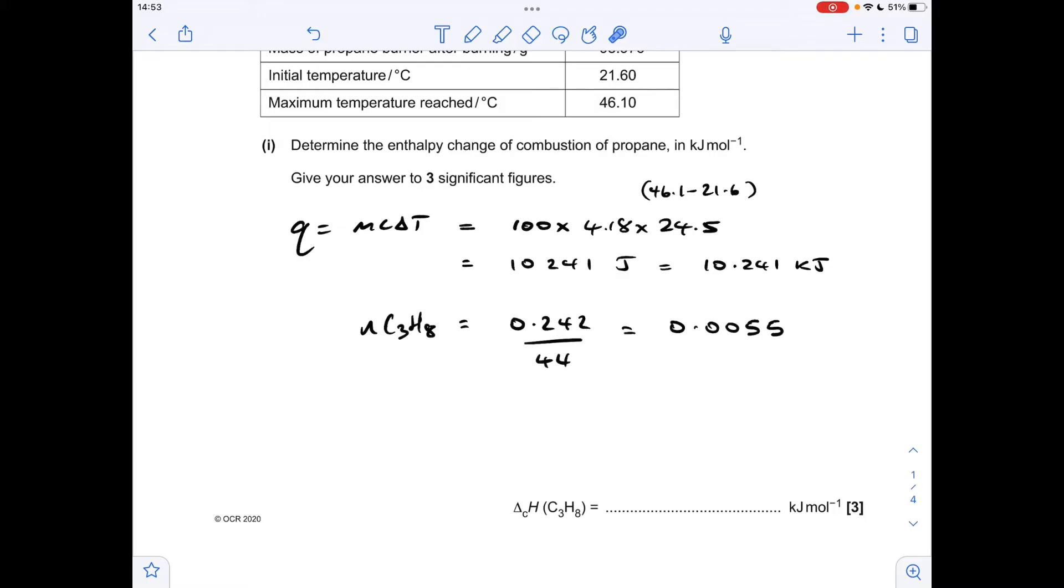The next thing we do is work out the moles of propane that's been burned, so mass comes out at 0.242. That's the difference between those two mass readings. Divided by the MR of propane, which is 44, gives us this many moles.